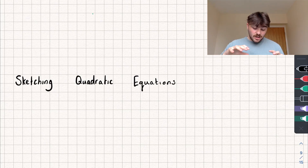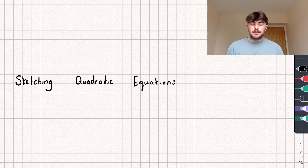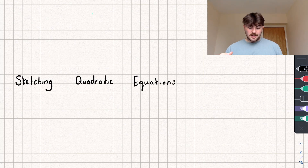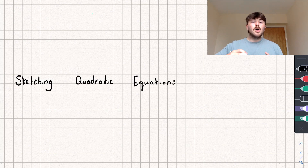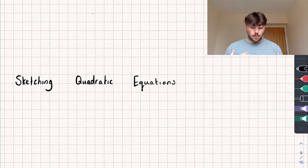In this video we're going to take a look at sketching quadratic equations. This is something some of you may have seen before in GCSE maths, and the way you will have probably done it is by taking a table of x and y values, plotting these as coordinates on a graph, and then joining these points together to get your quadratic.